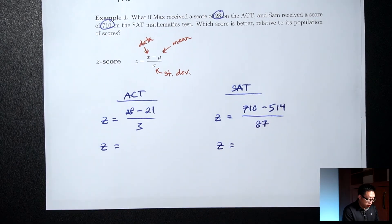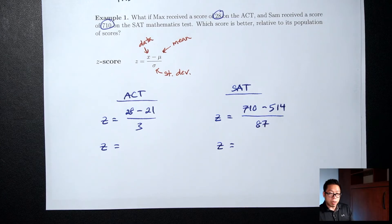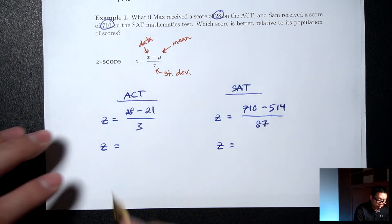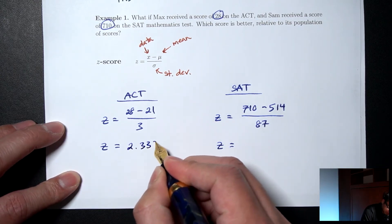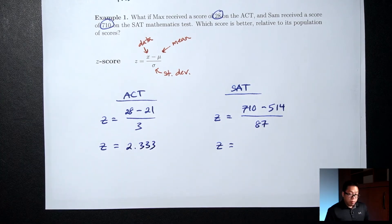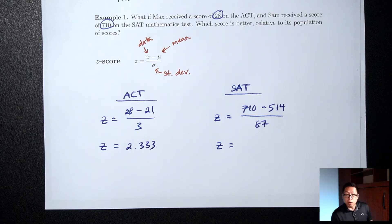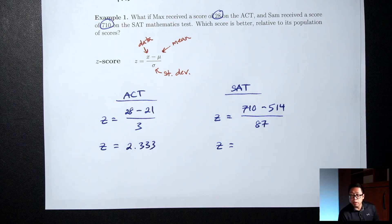Alright, let's enter both of these onto the calculator. For the ACT up top, 28 minus 21, on the bottom 3. Round it to 3 decimal places, 2.333. For the SAT, up top 710 minus 514, on the bottom 87. Round it to 3 decimal places, this is 2.253.